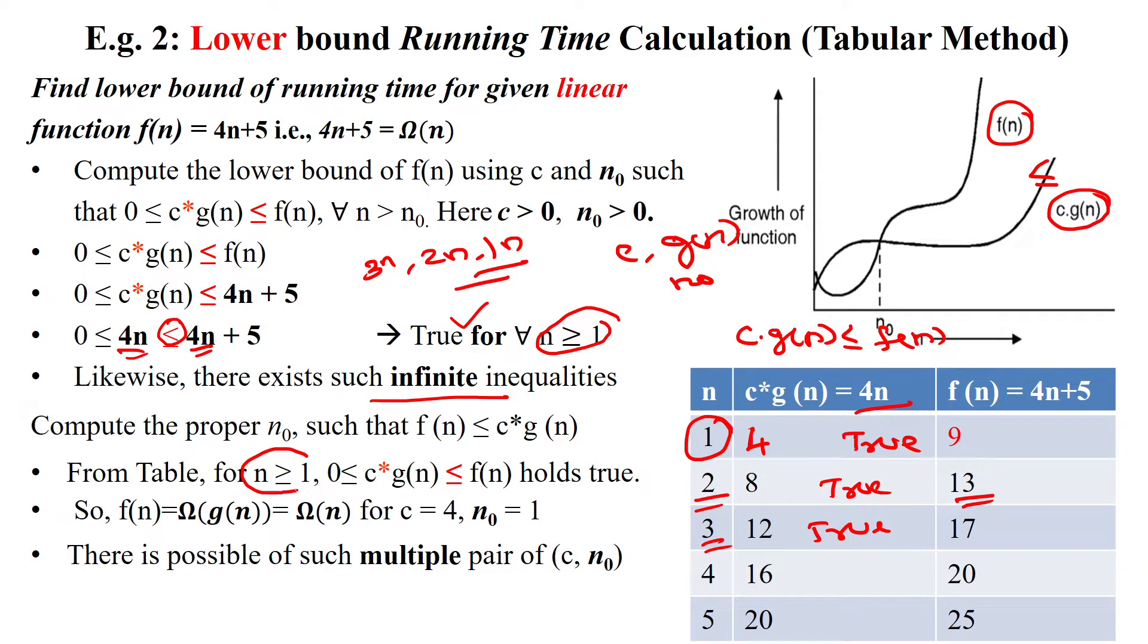From the table, what can we finalize? For all n greater than or equal to 1, the given condition 0 less than or equal to c times g(n) less than f(n) satisfies the condition true. So we can say f(n) equals big omega of g(n) equals big omega of n.